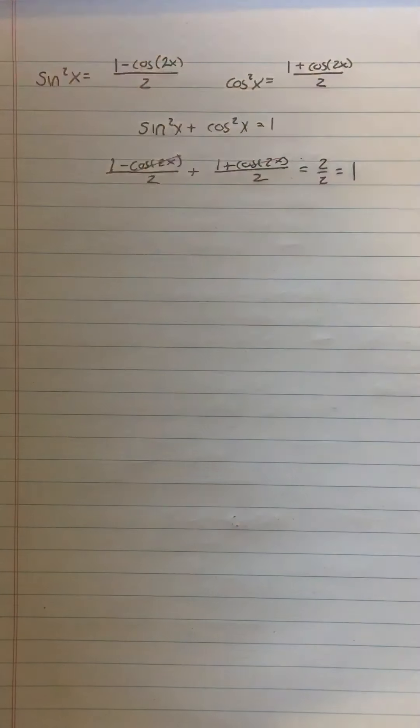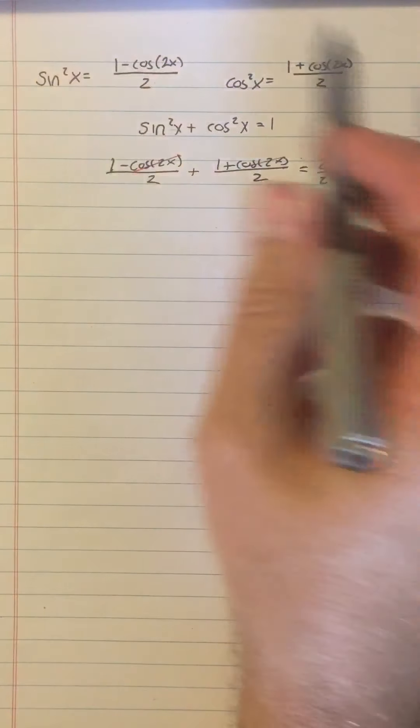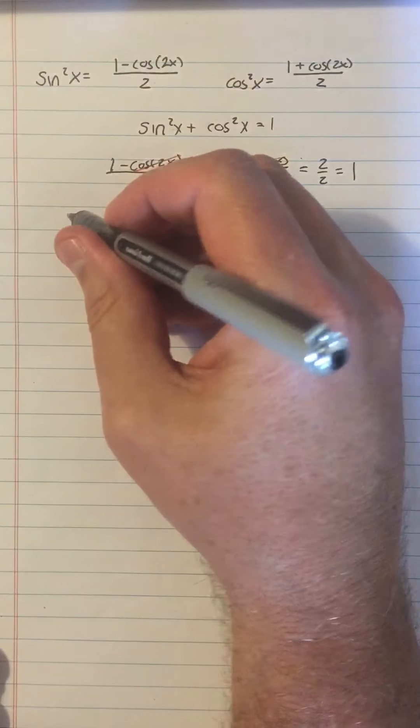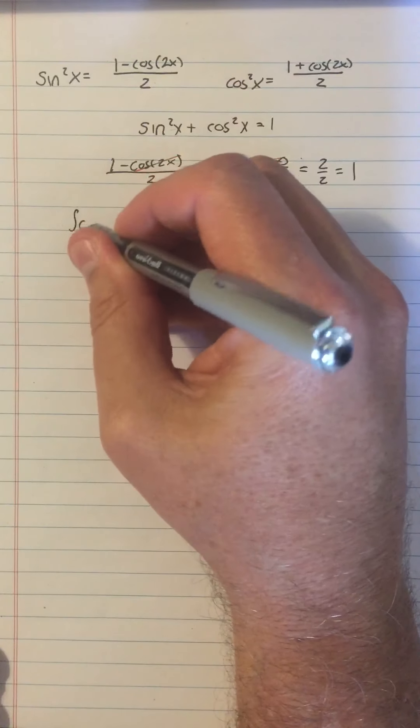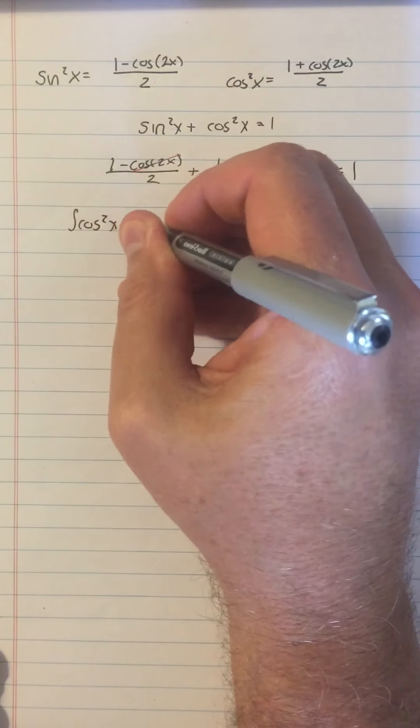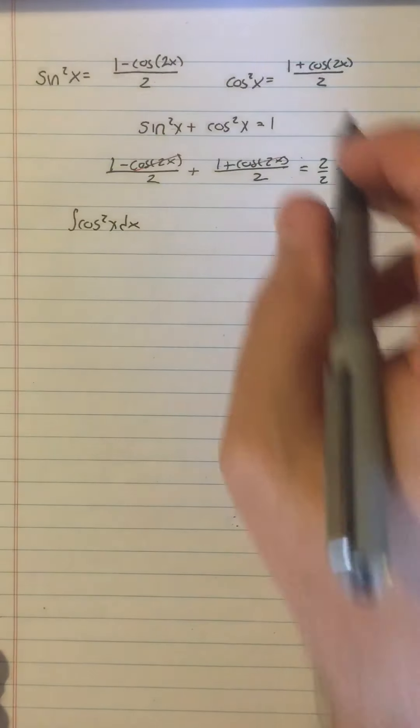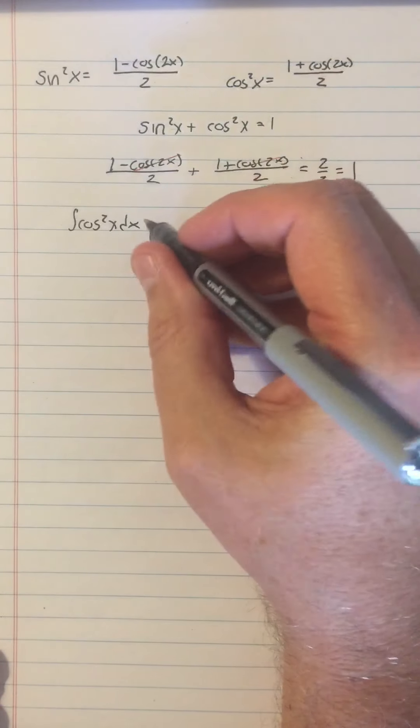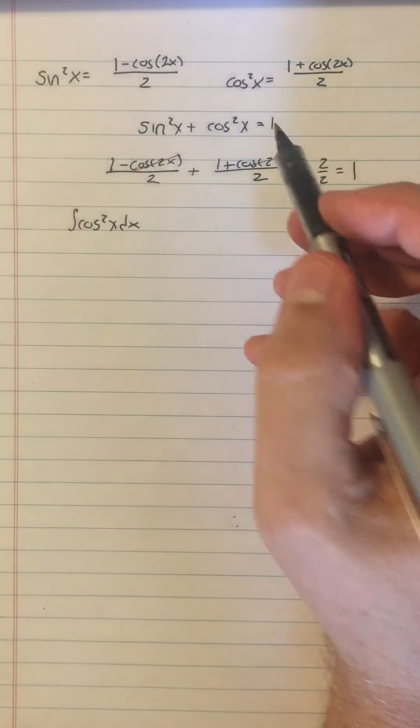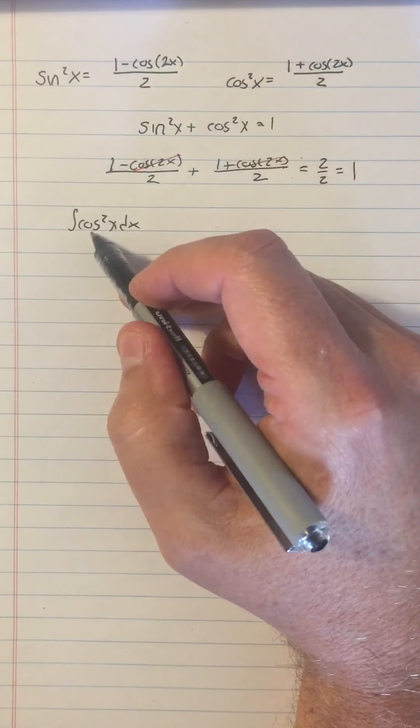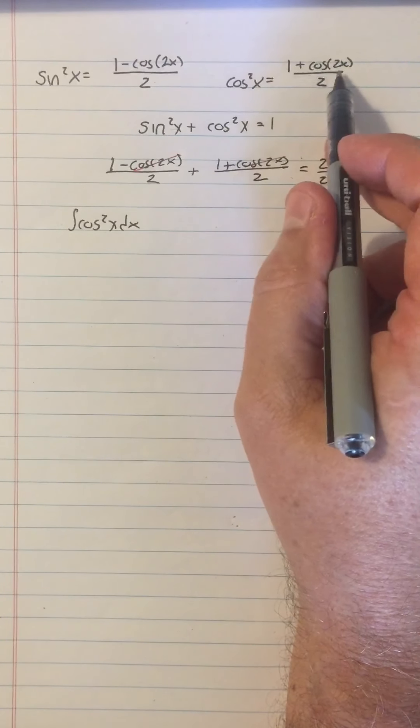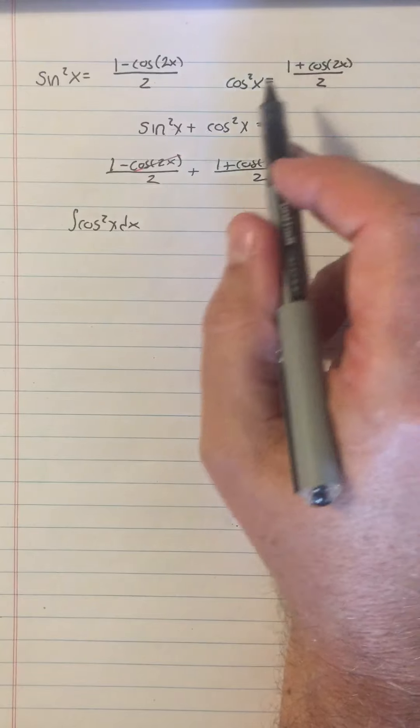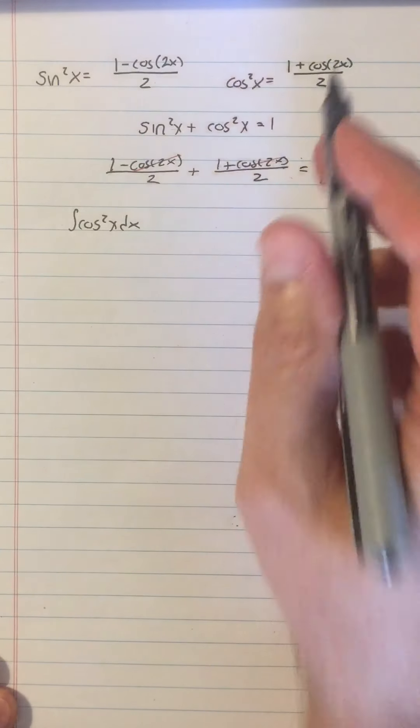Anyway, there's that now. Let us see how we can use these formulas to find out things like what is the integral of cosine squared x dx? Well, we just replace the cosine squared with this formula. Again, how it really comes down to is cosine squared x is something I don't know how to integrate. Cosine of 2x is something I do know how to integrate. So I'm changing what I don't know into what I do know.